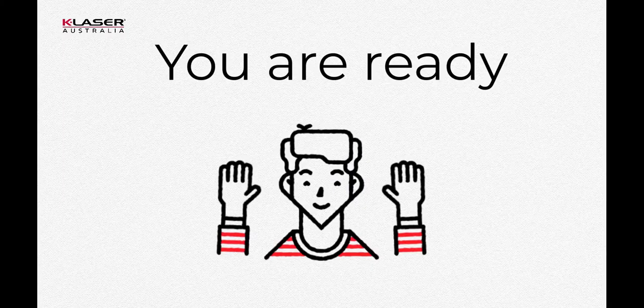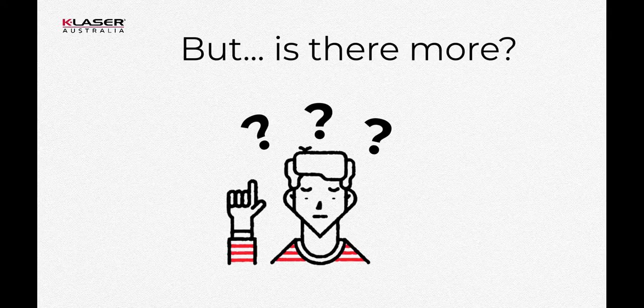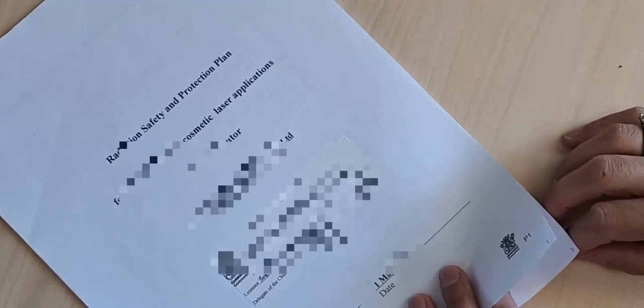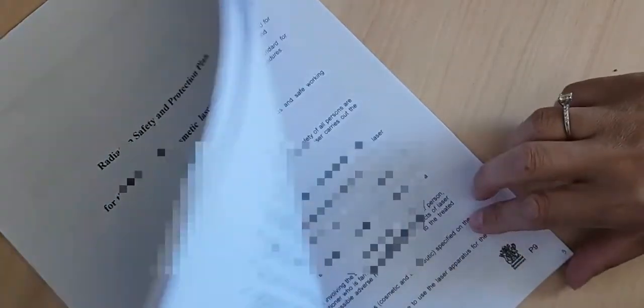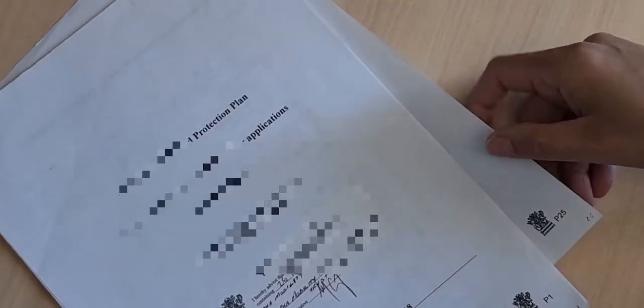Once you have completed the practical training, you are ready to use a laser in Queensland. However, if your clinic does not have a laser already, the clinic will need to apply for a possession license. This extra step takes about two to three months. The application form is easy, but you must include an RSPP — a long legal document specific to your clinic, the clinical applications that you will treat, and the specifics of the laser apparatus you wish to purchase. K-Laser Australia guides you through the process and writes the RSPP document with you.